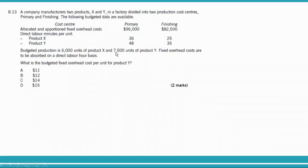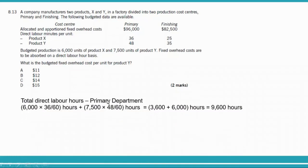Total direct labor hours in the primary department: 6,000 units of X multiplied by 36 divided by 60, plus 7,500 units of Y multiplied by 48 divided by 60. This converts minutes into hours. The total comes to 9,600 hours in the primary department.